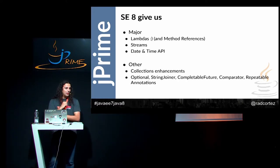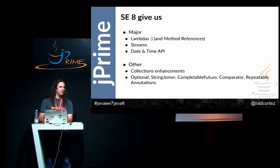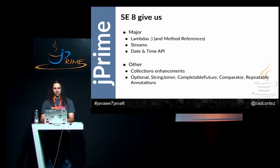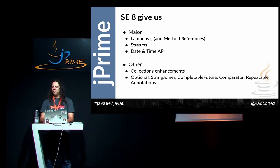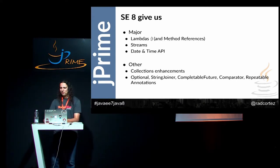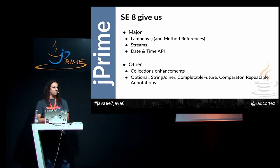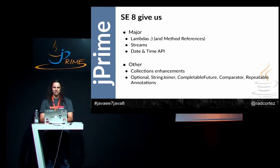So what do we have with SE8? The major features are, of course, lambdas and method references; the Streams API, which is a very powerful API that provides collection enhancements allowing you to chain multiple methods on collections; the new Date and Time API, which is probably the first proper implementation of date-time on the Java platform — I think they got it right this time; and also Optionals, String Joiner, CompletableFuture, Comparators, and other small but really interesting features.